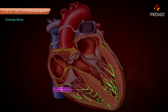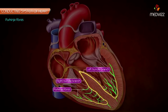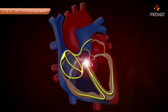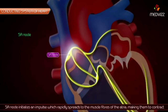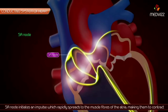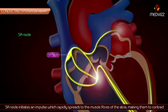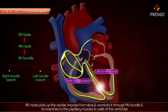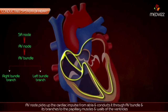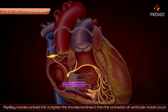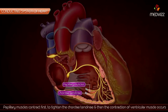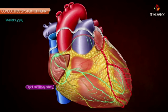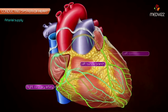Purkinje fibers: they are the terminal branches of the right and left branches of the bundle of His and spread subendocardially over the septum and the rest of the ventricular wall. In summary: the SA node, a spontaneous source of cardiac impulse, initiates an impulse which rapidly spreads to the muscles of the atria, making them contract. The AV node picks up the impulse and conducts it through the AV bundle and its branches to the papillary muscles and the walls of the ventricles. The papillary muscles contract first to tighten the chordae tendineae, and then ventricular muscle contraction occurs. Arterial supply: the whole conducting system is supplied by the right coronary artery, except a part of the left branch of the AV bundle, which is supplied by the left coronary artery.